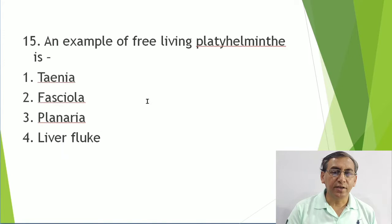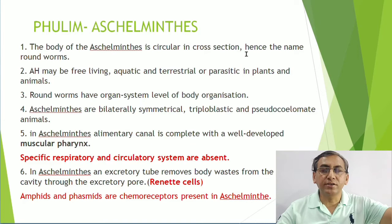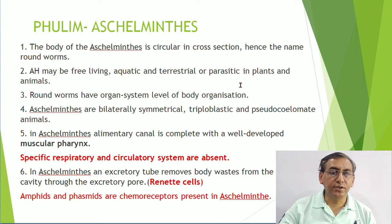Aschelminthes are known as the roundworms. Why are they known as roundworms? Because they are circular in cross section. This is the important point - they are known as roundworms because they are circular in cross section.